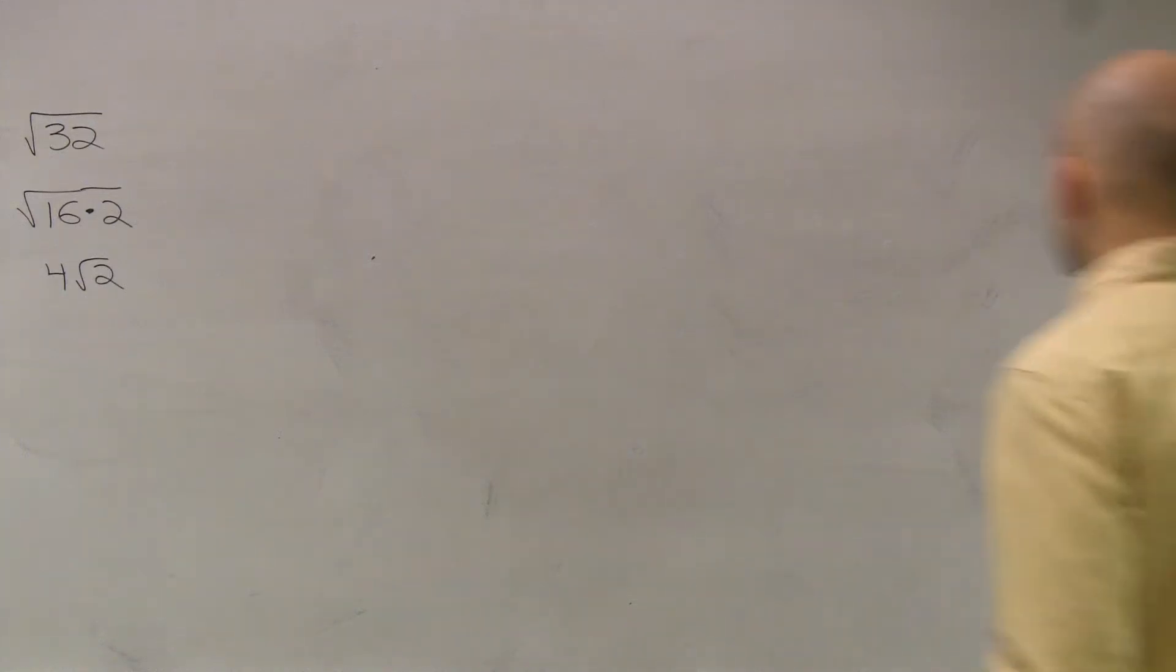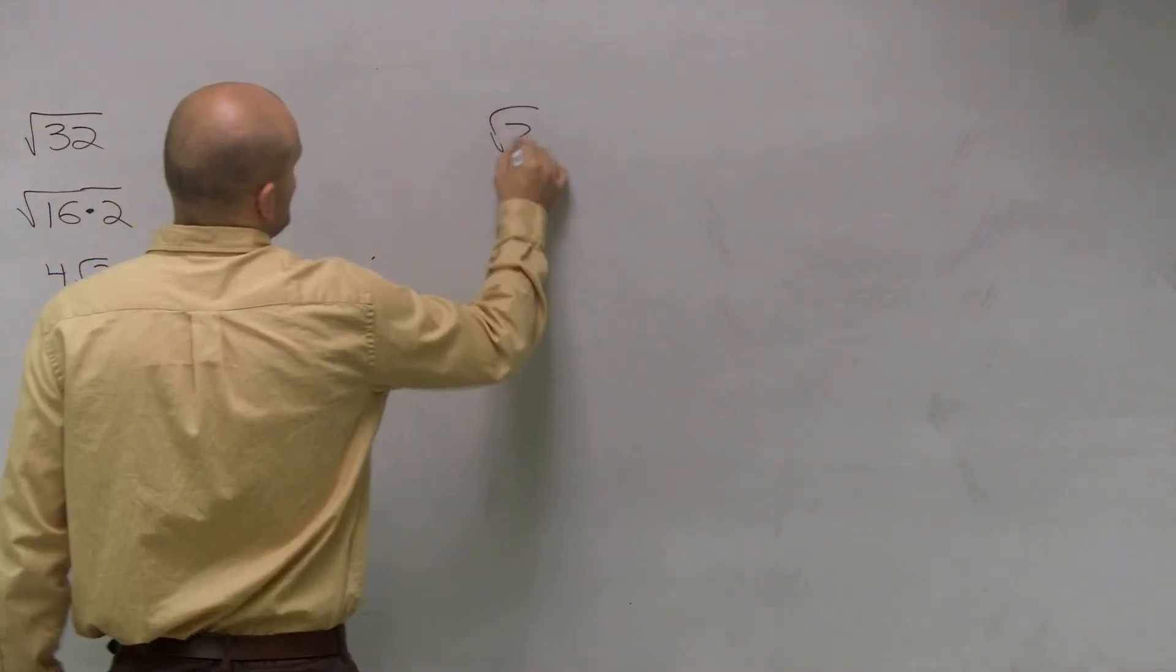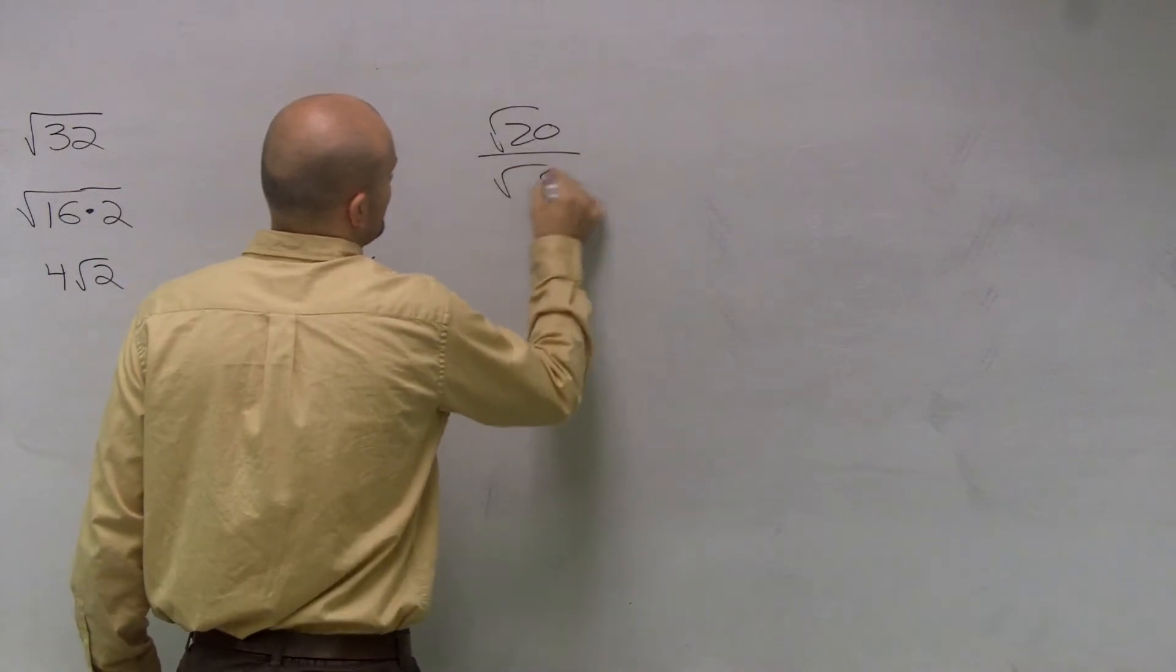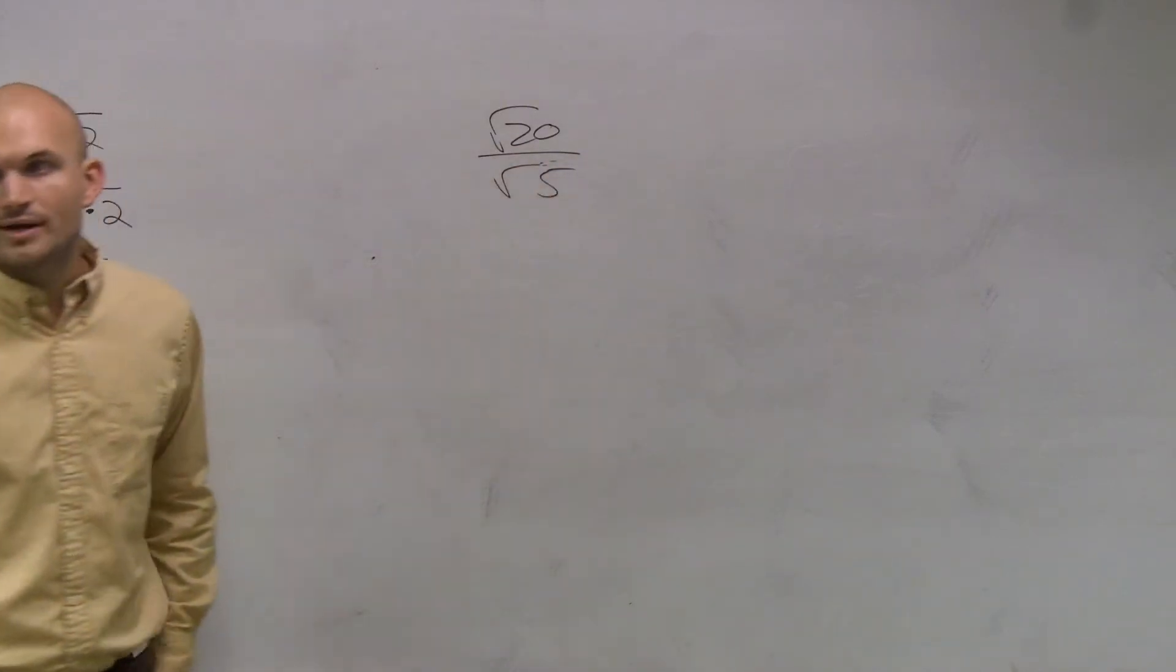So the square root of 20 over the square root of 5. I'm going to get you guys. So the square root of 20 over the square root of 5, correct?